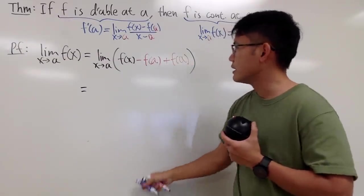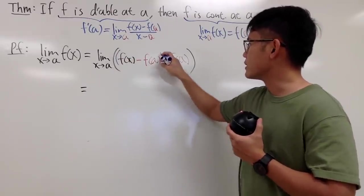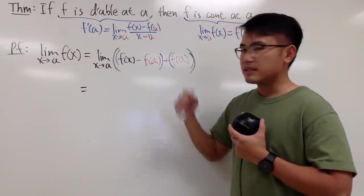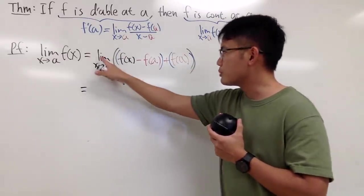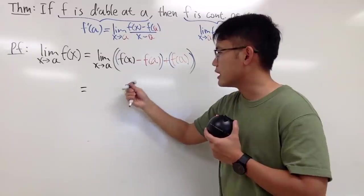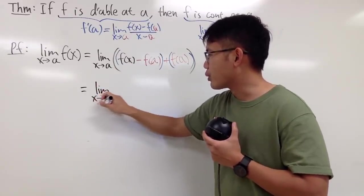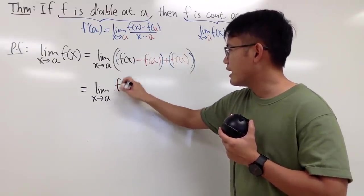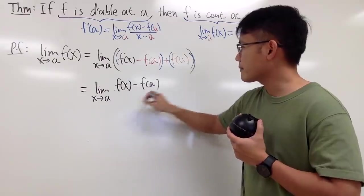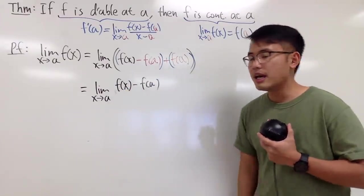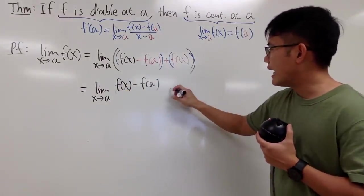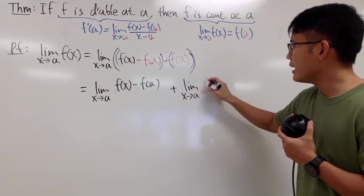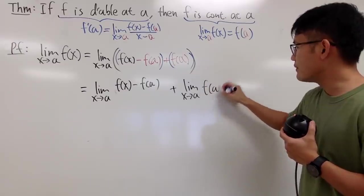So I'll just write down, this is the first parenthesis, this is the second parenthesis. The limit of the sum, it's the sum of limits. So first, let me just put down the limit of this right here first. I will write down the limit as x approaching a, and let me just write this down right here, f of x minus f of a. So that's this part. And then I'm going to add, I will put the limit for this guy, the limit as x approaching a, and this is just simply f of a, like that.